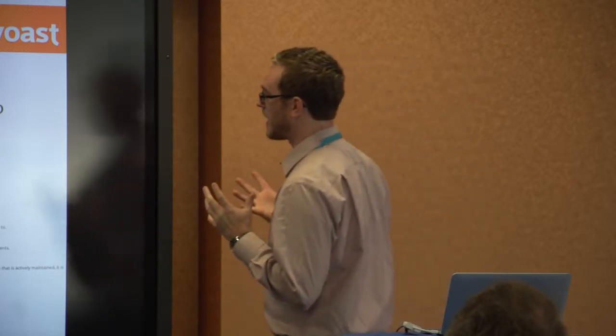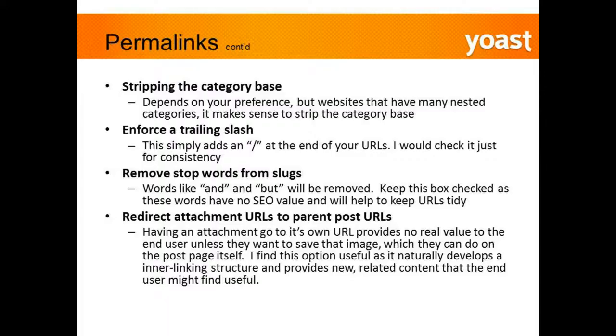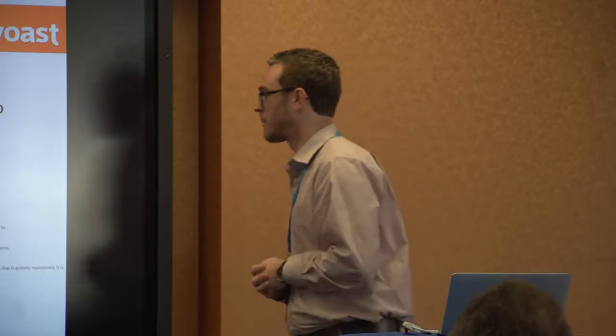Permalinks are the URLs used inside WordPress, and we have the ability to modify how they're structured. You have options like stripping the category base. Within your blog you may have categories — for example, a personal injury attorney might have 'car accidents' as a category, making the URL structure domain.com/blog/car-accidents/post-name. If you have a really small blog with shallow architecture, it makes sense to leave the category in there; but if you have very deep architecture, go ahead and strip it.